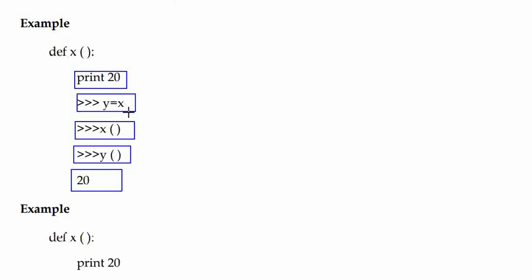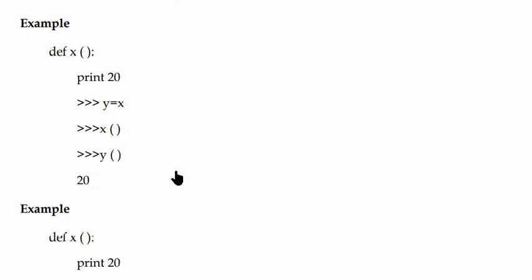So what do you see? You see the output 20, because x function is assigned to y. When y function is called, then 20 is printed. Let's take another example.